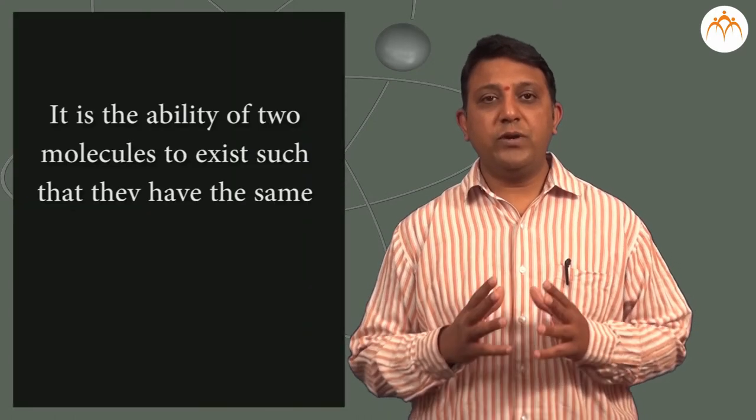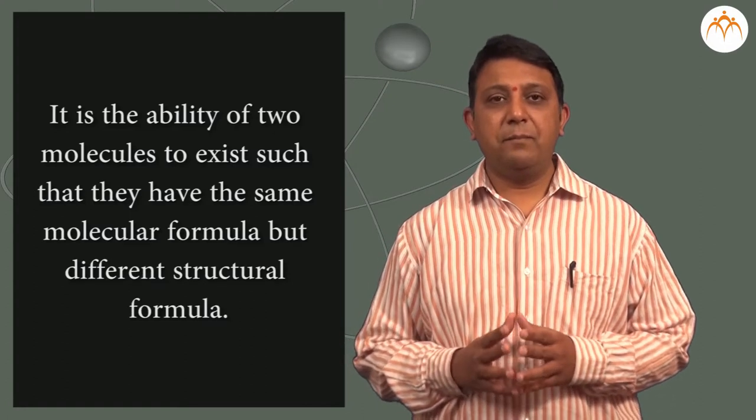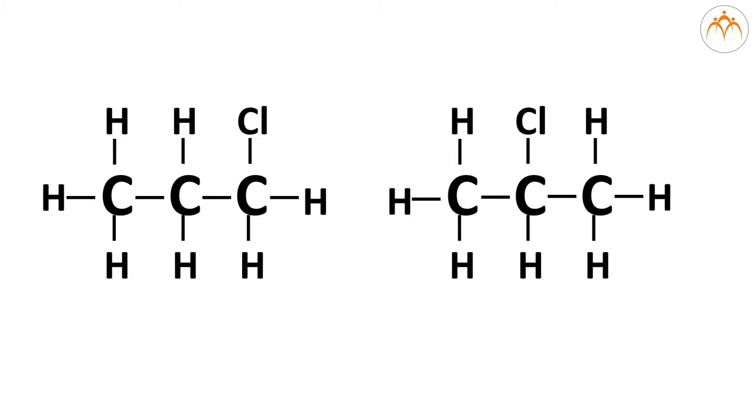Another property of carbon compounds is that they can exist as isomers. What is isomerism? It is the ability of two molecules to exist such that they have the same molecular formula but different structural formula. To explain that, I am going to take a three carbon chain and I have the ability to place the chlorine on any one of these. When I place chlorine on the end carbon, it gives me a different structure than when I place the chlorine on the middle carbon. So even though the molecular formula is the same, I have different structural formulas, so it exists as isomers. That leads to further increase in the number of carbon compounds that are possible.